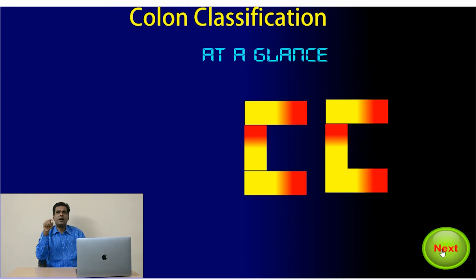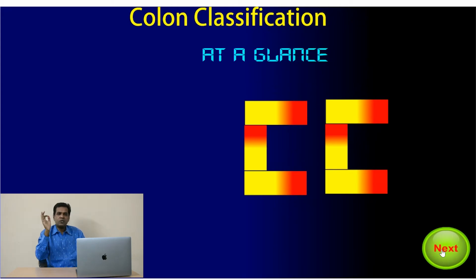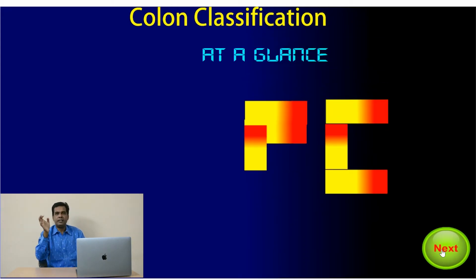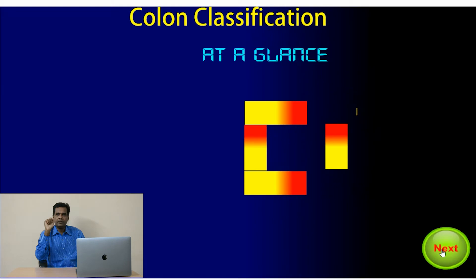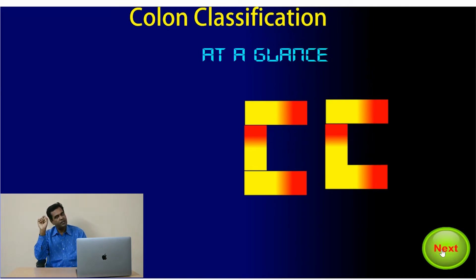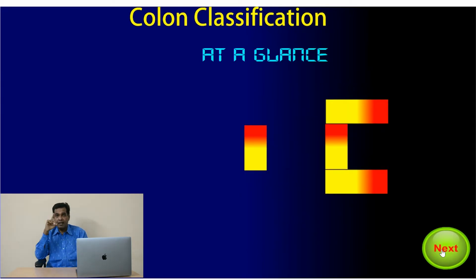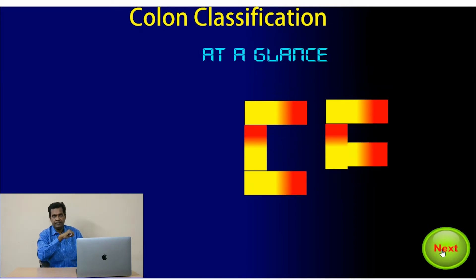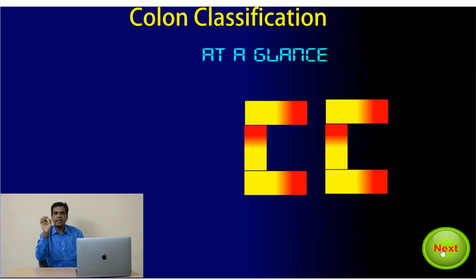Another advantage of Colon Classification Scheme is clear-cut rules. The rules need to be applied by the classifier whenever they are warranted. Since Colon Classification uses the facet formula, the facet may manifest itself in any format depending on the situation — as personality in one main class and matter in another. Rules need to be followed to handle complications; if you want to avoid confusion, you must follow the rules.